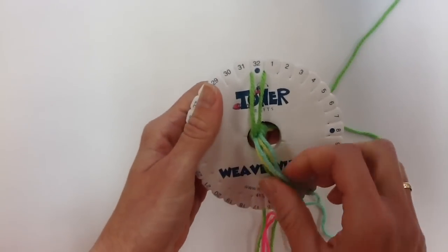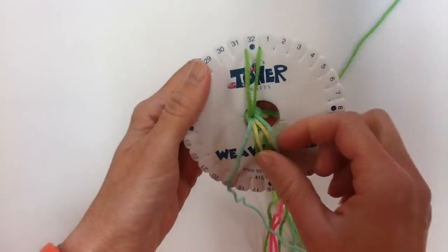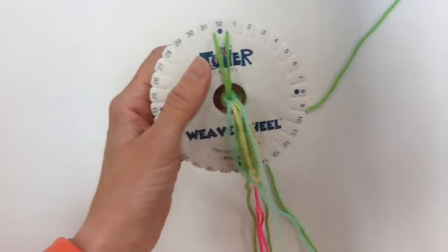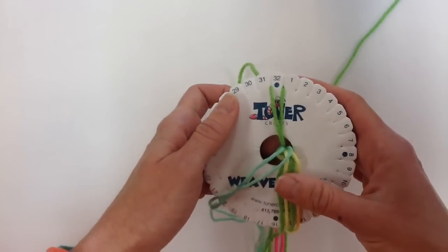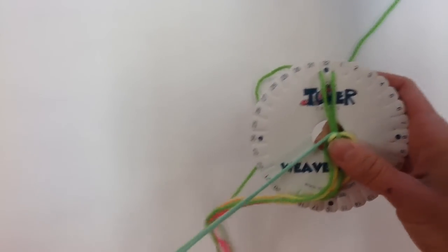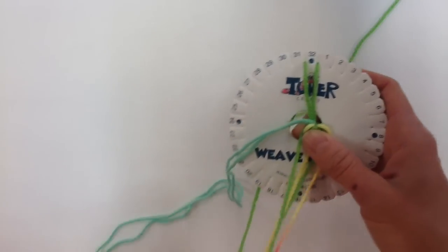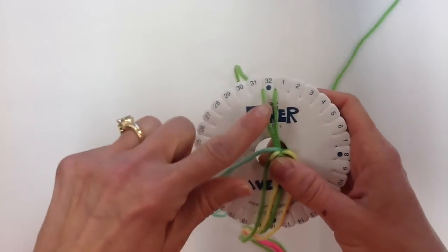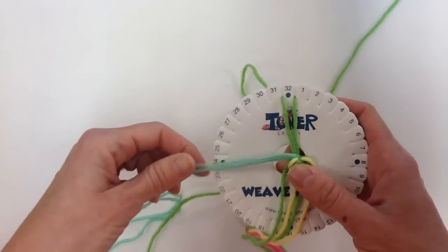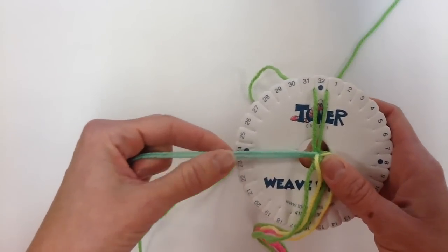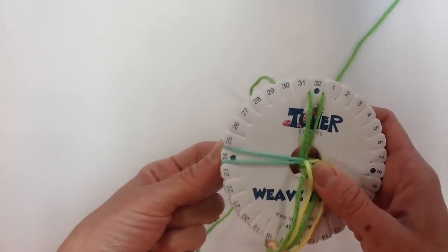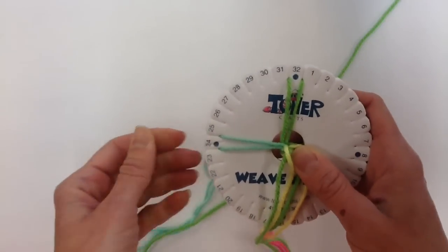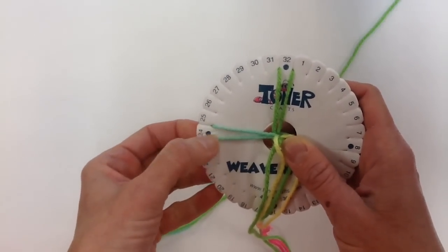I have to keep these colors separated because since I chose a variegated yarn, which is the one that changes colors, we don't want to get that mixed up with my lime green. So here's my fluorescent variegated yarn. That's going to go between the 24, one on each side of the dot.